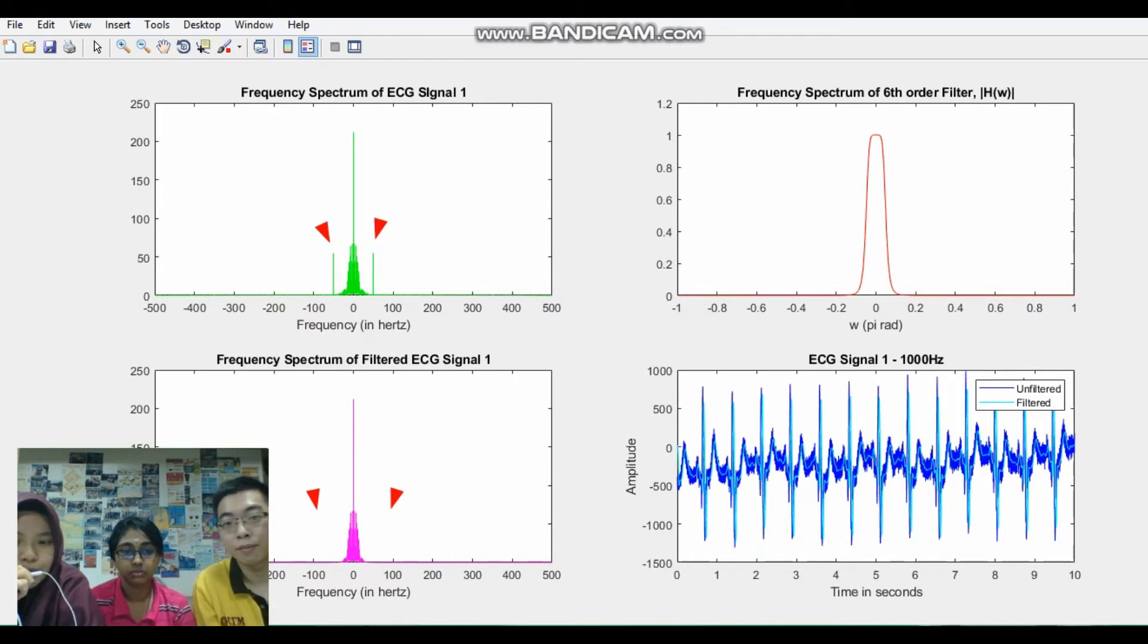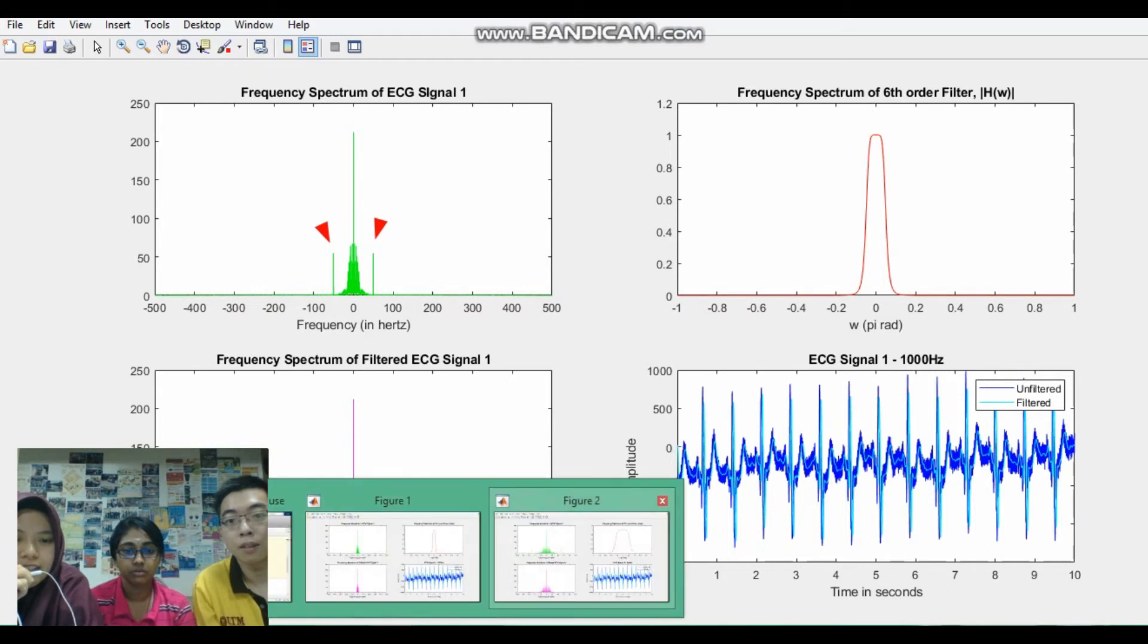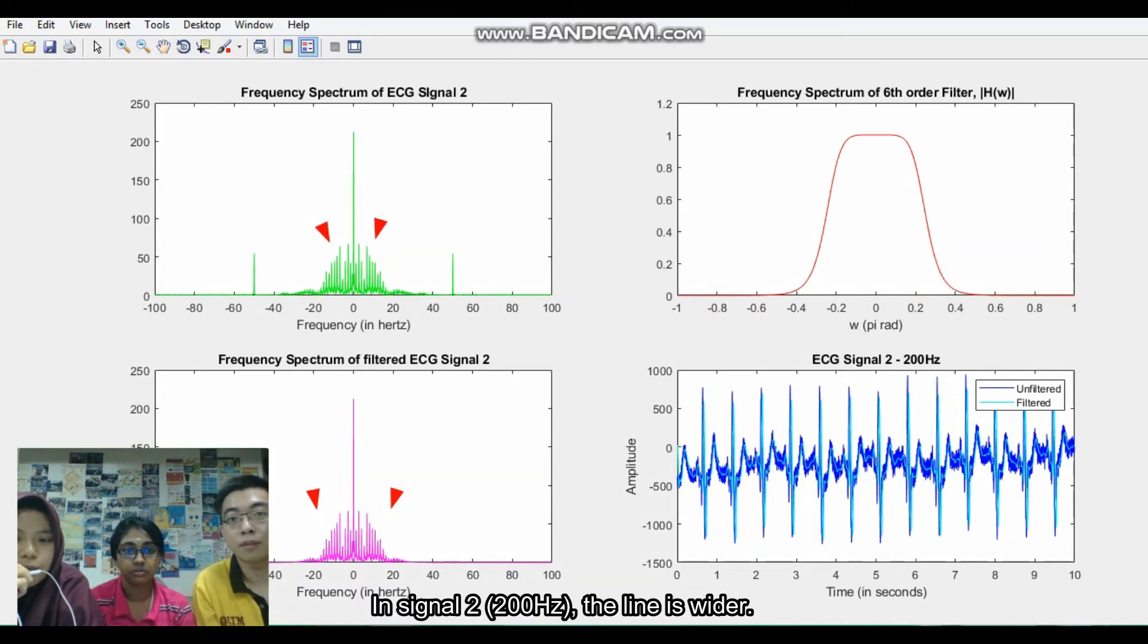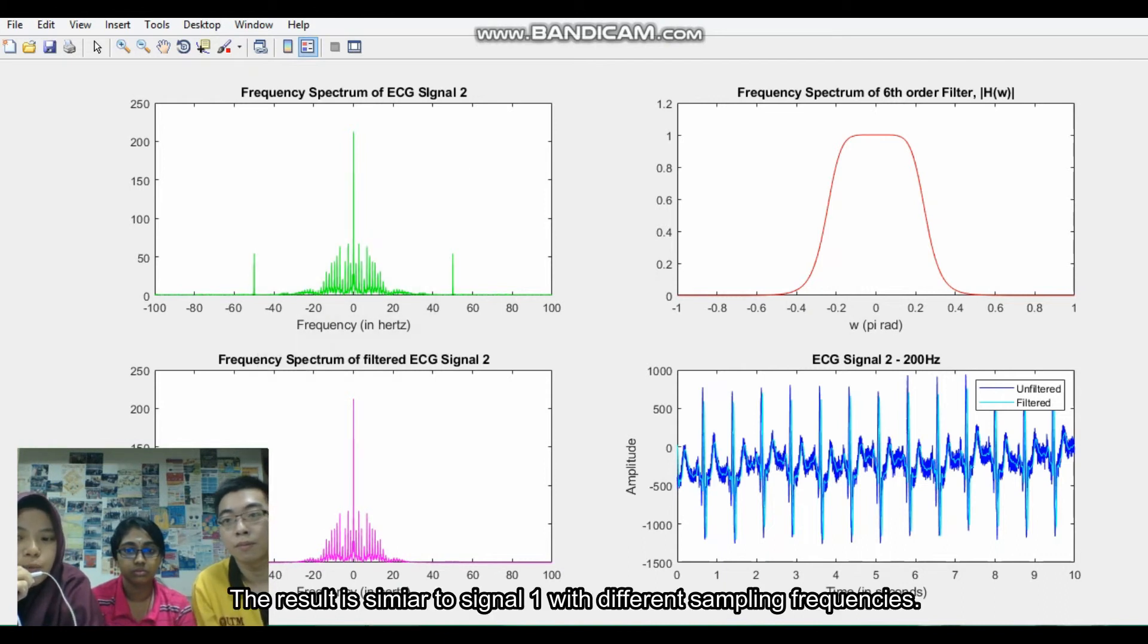For signal 2, we use 200Hz and the line will become better. The result is shown same with signal 1 because we use the same filter.